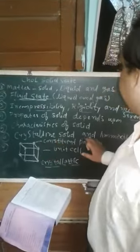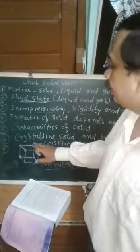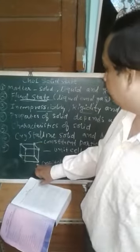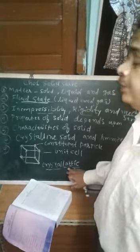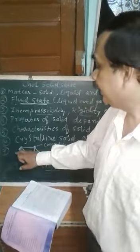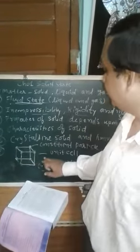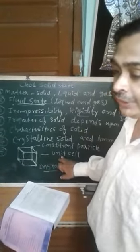They are rigid and incompressible. The atoms, molecules or ions make an entire structure that is known as crystalline. They are also defined as a unit cell, in which constituent particles - atoms, molecules or ions - make a definite structure that is known as a unit cell.